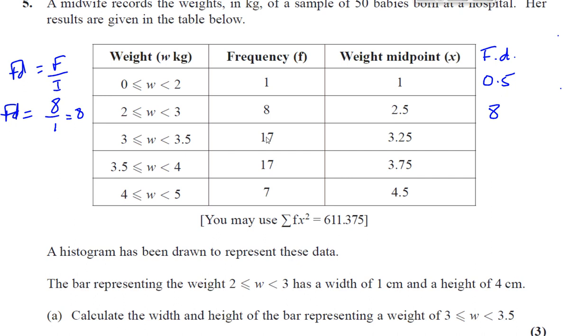For the third bar, and now we're only concerned with the 2 to 3 bar and the 3 to 3.5 bar. So it's only these two that we really care about in this question. So let's just look at this one now. So the frequency density is equal to the frequency, which is 17, divided by the width of the bar, which is 0.5. Now that's 17 times 2, which is 34.